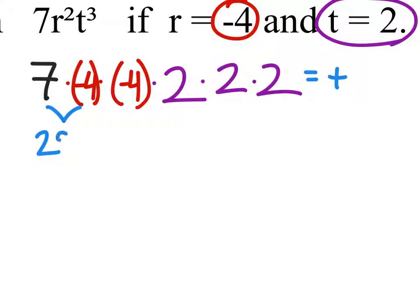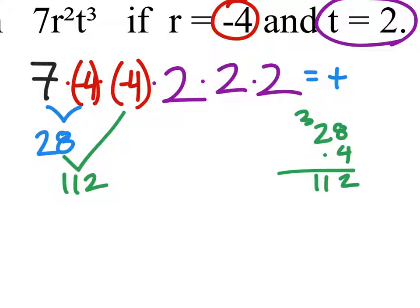7 times 4 is 28. Now we'll do 28 times this 4. So I'll do the calculations over here. 28 times 4. 4 times 8 is 32. 4 times 2 is 8. Plus 3 is 11. So that's 112 now.